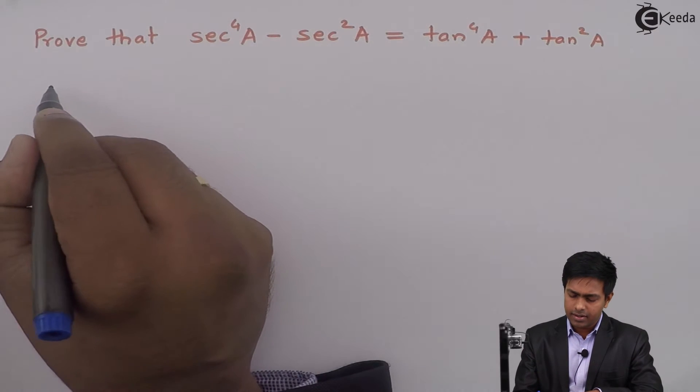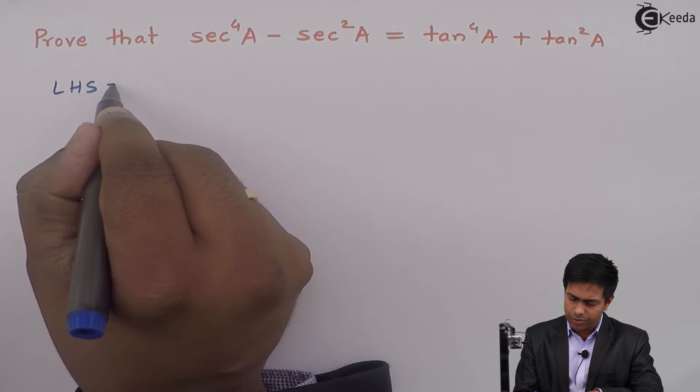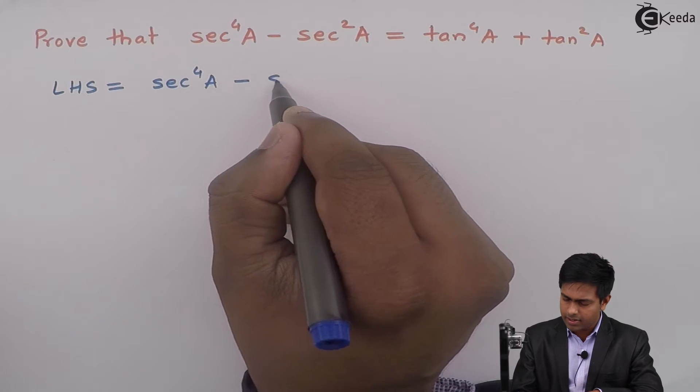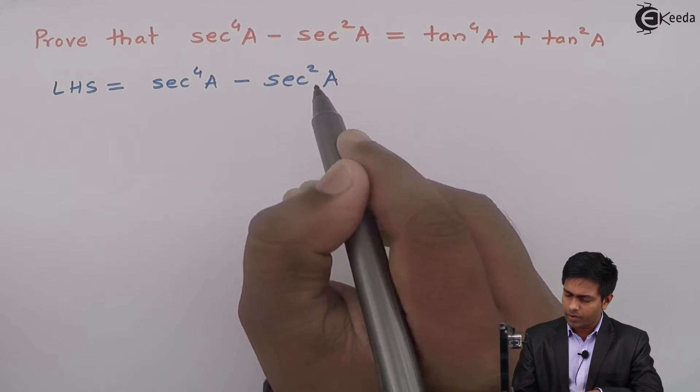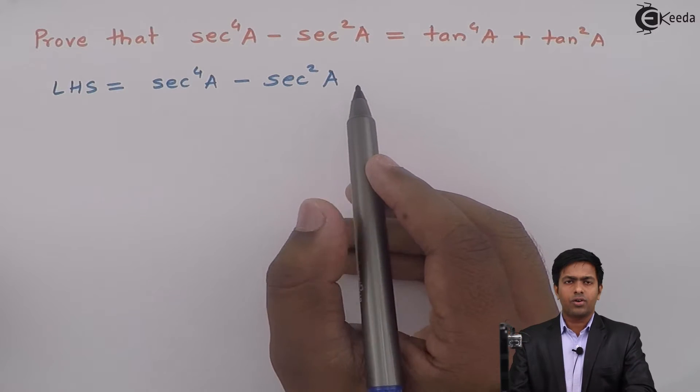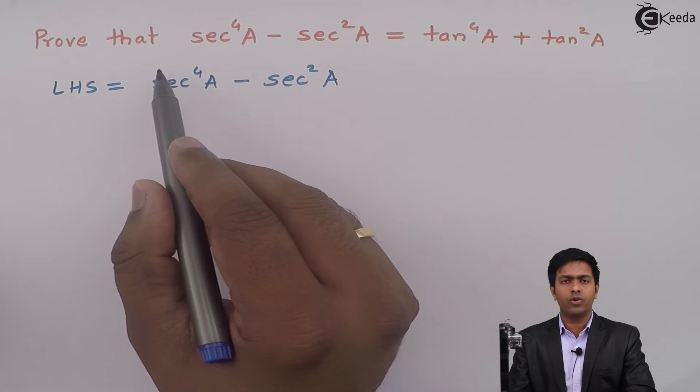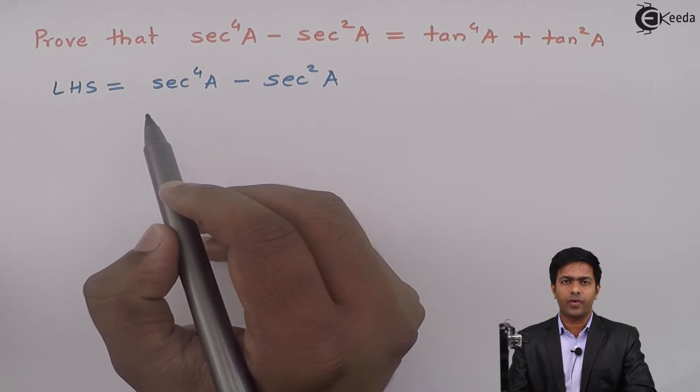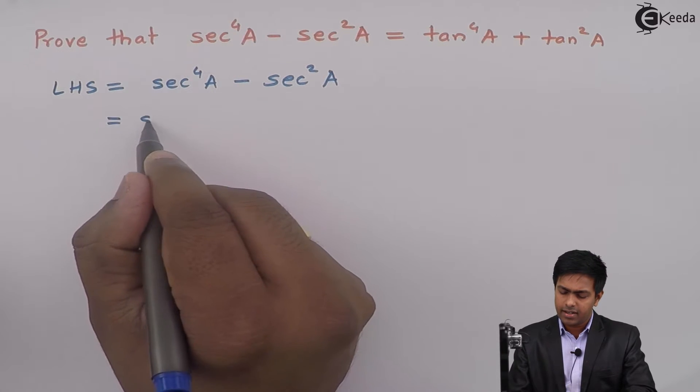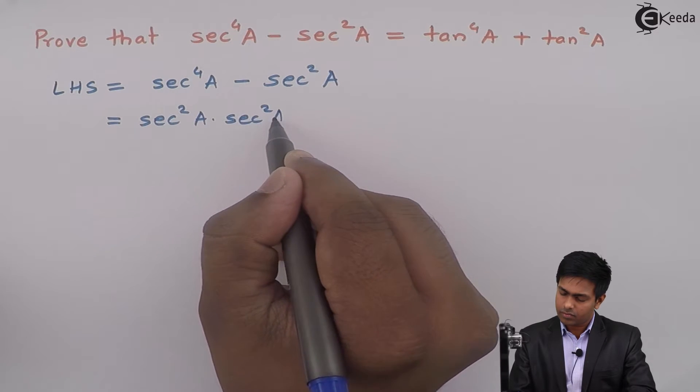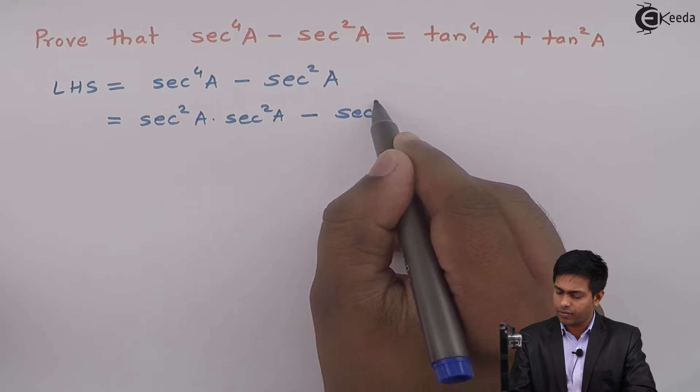So here I will say LHS is equal to sec raised to 4A minus sec square A. Now sec square A is not a problem for us. So for sec raised to 4A, what we can do is we can make it as sec square A the whole square, or we can write it as sec square A into sec square A minus sec square A.